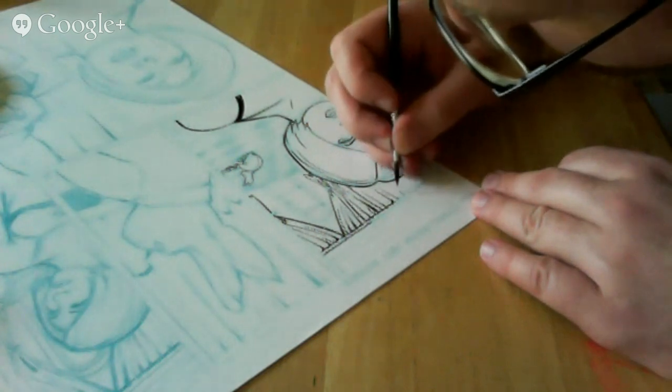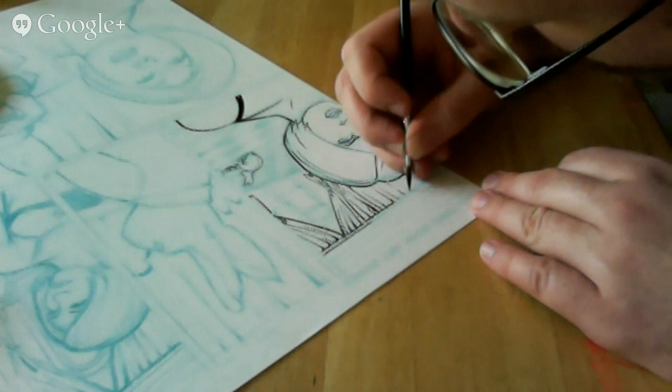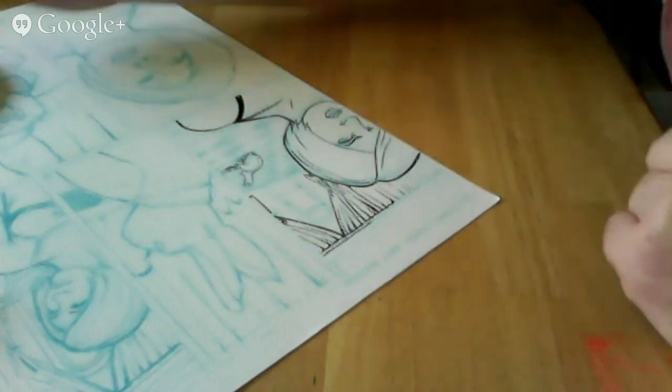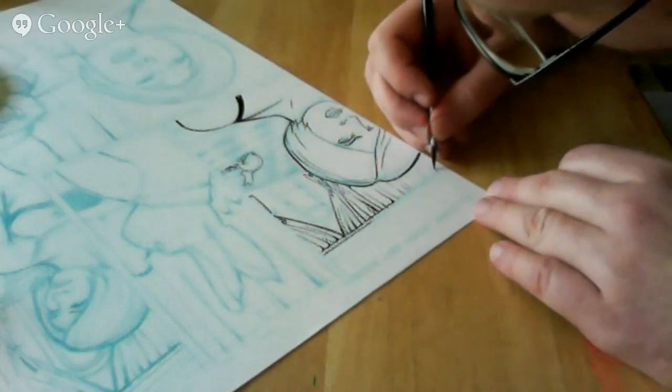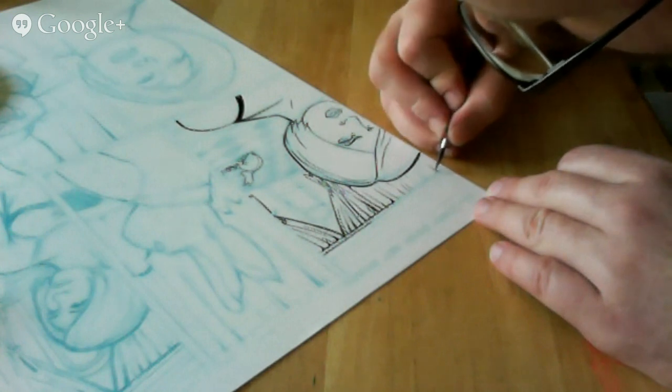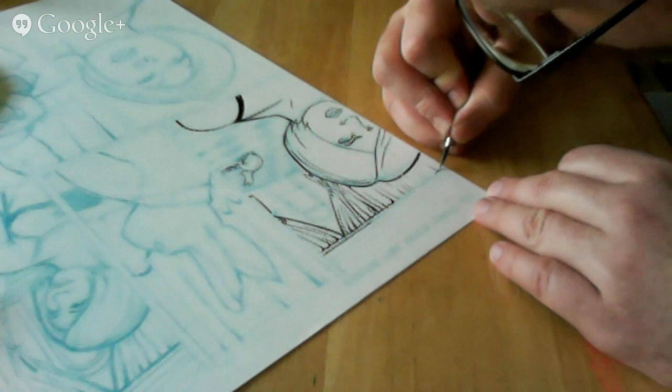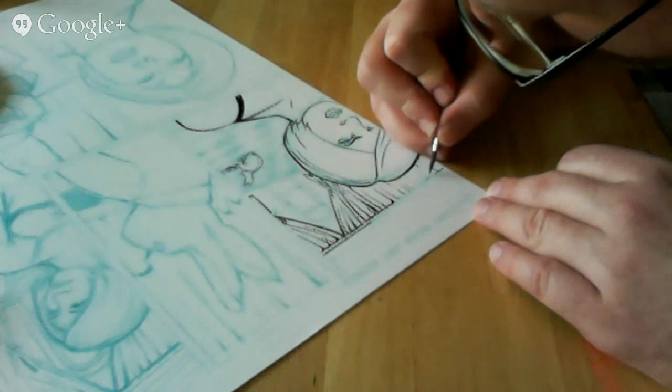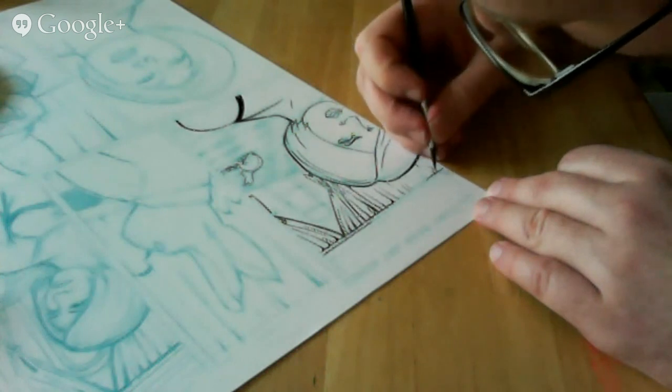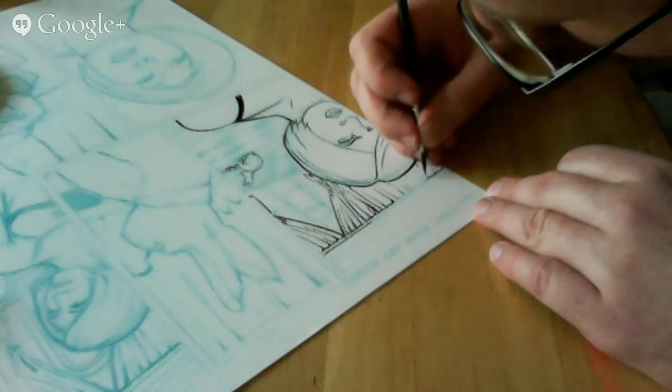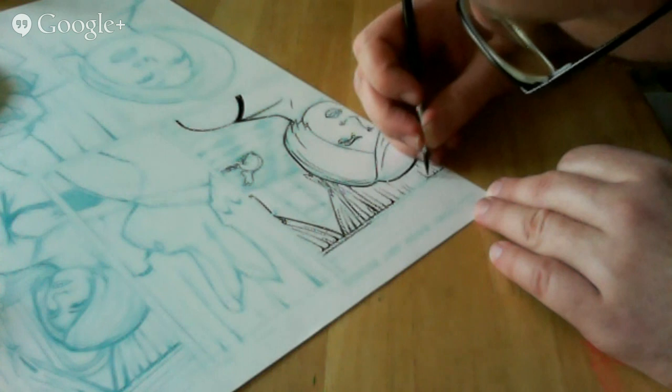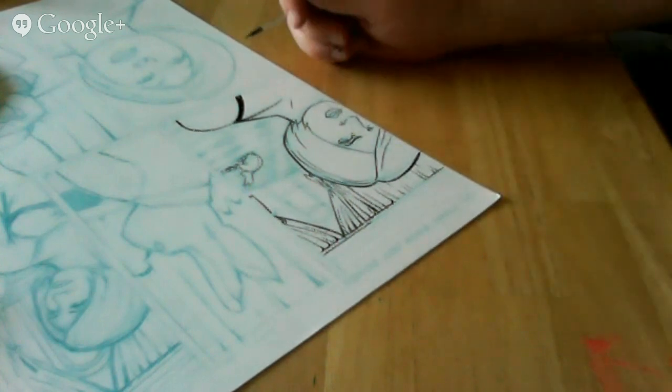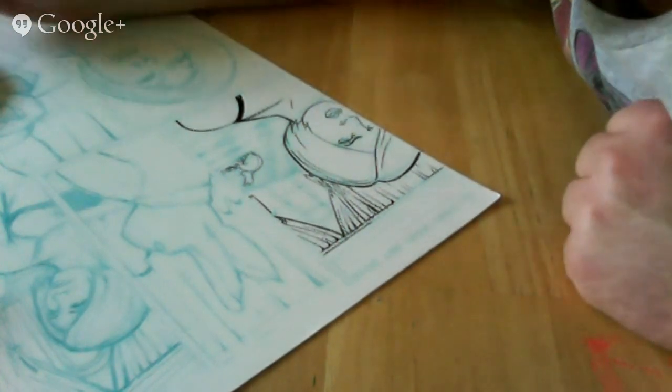I made sure before I got started with this video that I had a good scan of this page because once I start inking it, there's never going to be this page again. I'm inking with the original pencils. Most of the other pages of Alice in Zombieland I've done, the pencils were on a separate page except for page one. I traced the entire thing onto an original sheet of paper. But page two was a printout, page three was a printout, so the original pencils still exist. Depending on the art in the comic world, sometimes the pencils still exist, sometimes they don't.